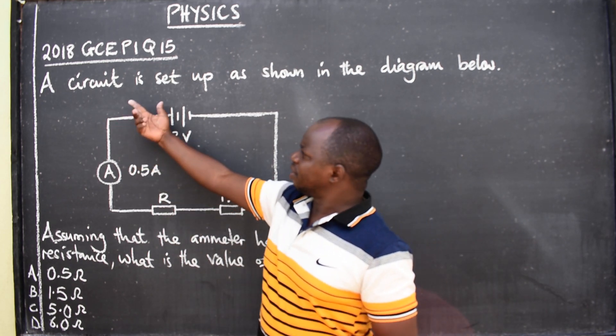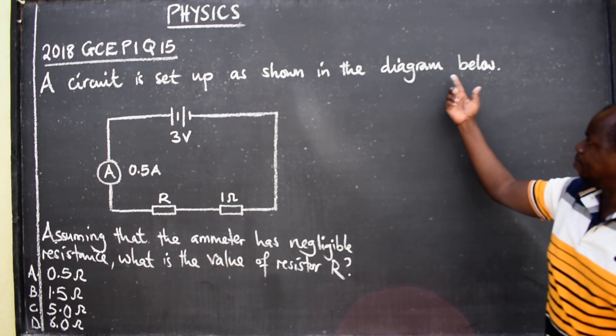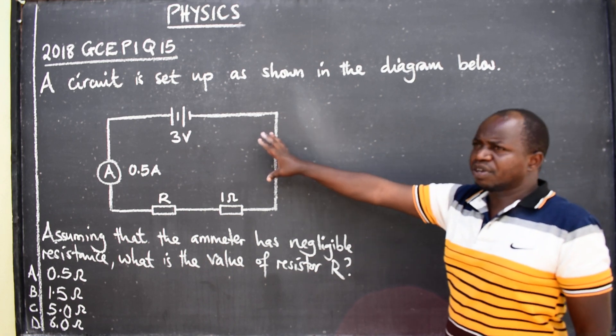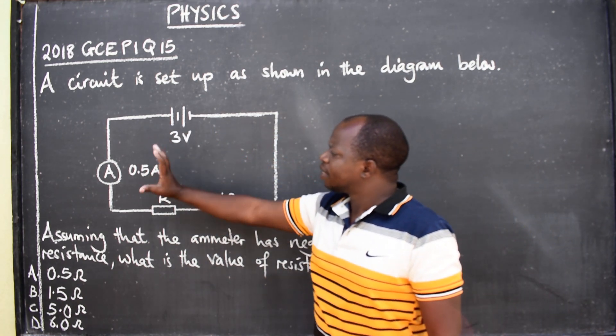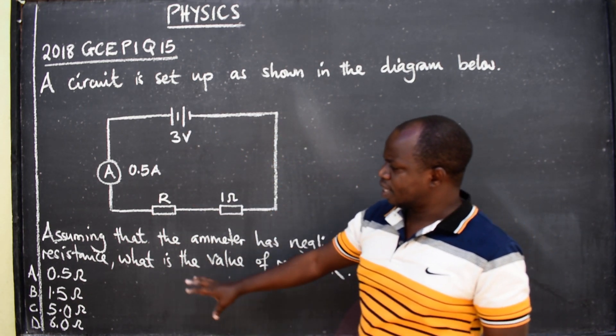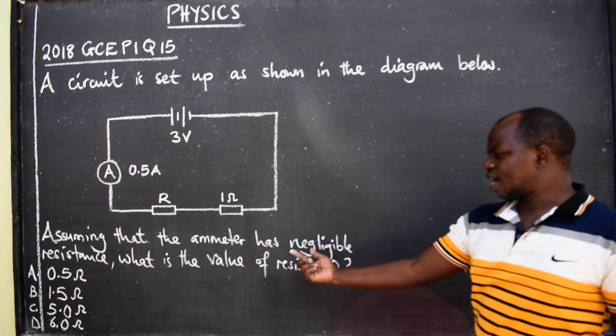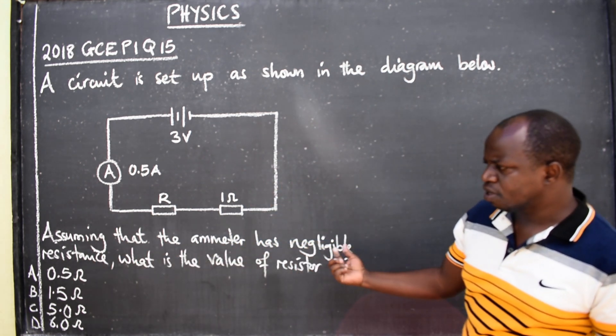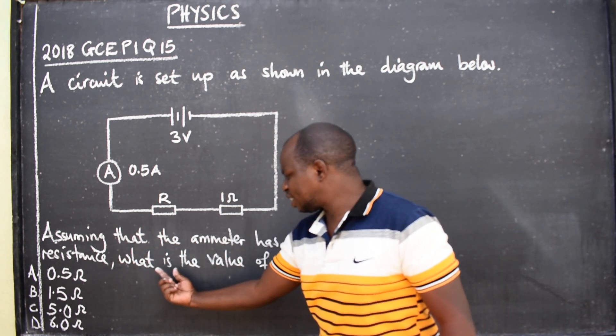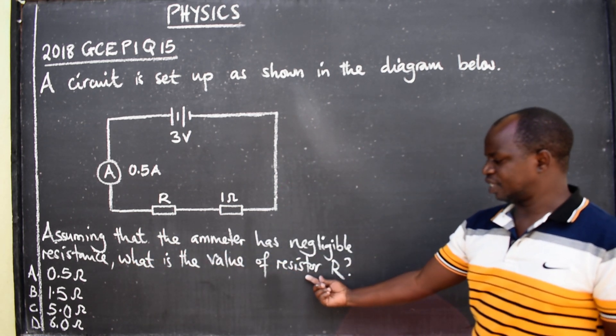A circuit is set up as shown in the diagram below. So we have a circuit that has been set up and there is a question here. Assuming that the ammeter has negligible resistance, what is the value of resistor R?